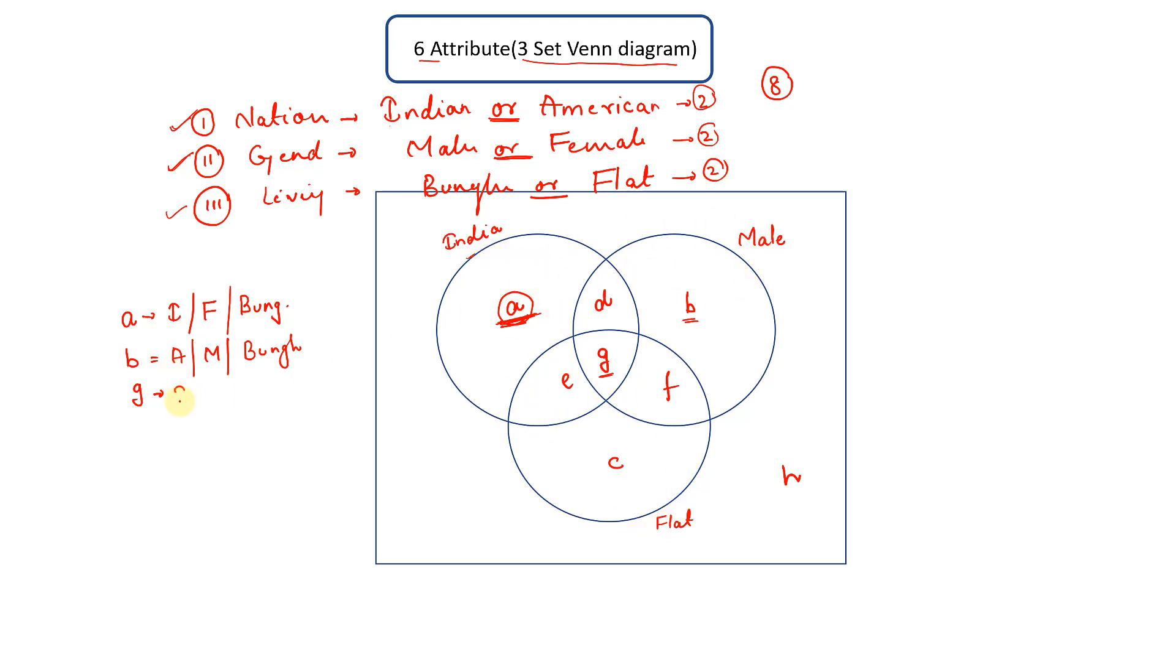Now what about h? H is outside these three circles, so it is American, female, and not living in flat, so bungalow. So all together we had eight combinations, and we can see that we can represent all the eight combinations.